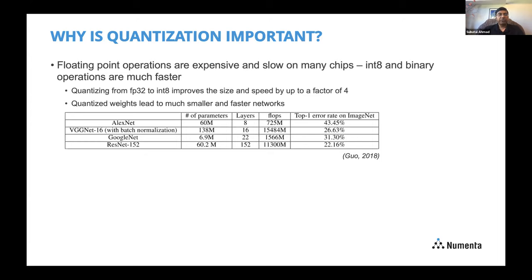Why is quantization important? Floating point operations are expensive and slow on many chips, while integer and binary operations tend to be much faster. Another reason has to do with overall system size and memory usage. Quantizing from FP32 to integer improves size and speed by a factor of four, and sometimes more depending on how you quantize. With quantized weights you can get much smaller and faster networks.